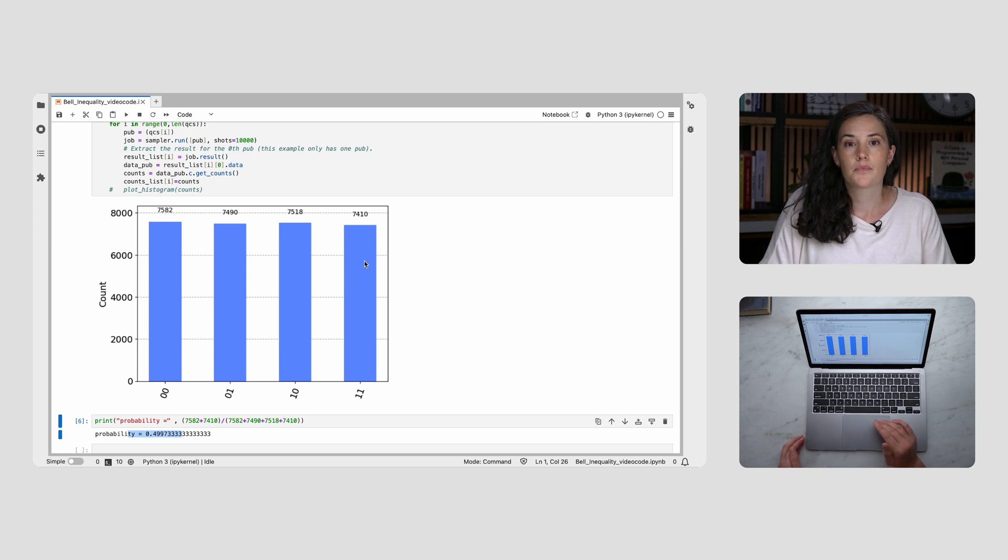So the probability of measuring both particles to have the same sign is very nearly one-half. This violates Bell's inequality.